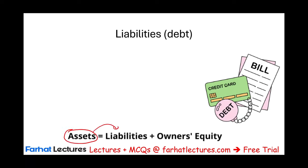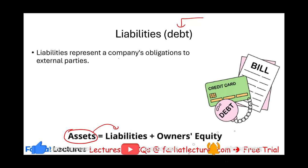Let's move to the second term: liabilities. If I want to define liability with one word, I would define it as debt. Liabilities represent a company's obligation to external parties. When you have debt, it means you have to pay someone — because you either borrowed money from them or purchased goods or services from them. Something happened, and as a result, you incurred the debt. It's because something happened in the past, and you owe someone something.